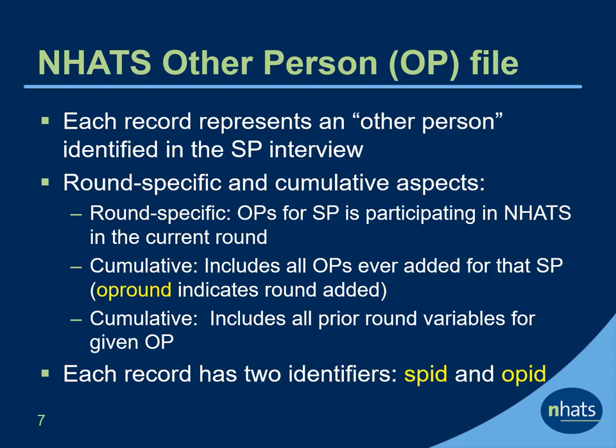The file is also cumulative in two respects. First, all OPs who have ever been mentioned by the SP are included. Note the variable OP round indicates the round that the OP was added. Second, all current and prior round OP variables are included. Each record has two identifiers that are unique when used together: an SP ID that links to the SP in tracker files, and an OP ID.